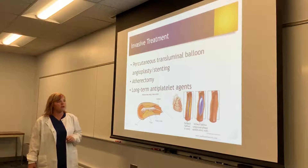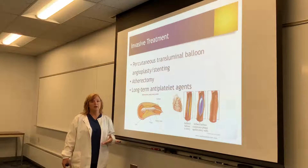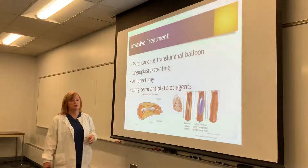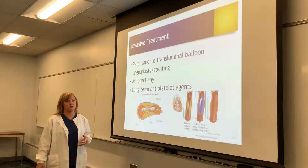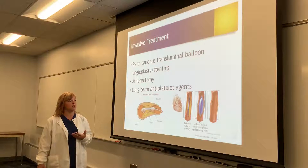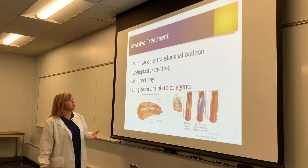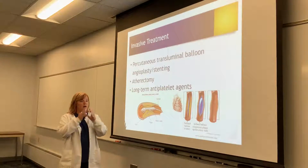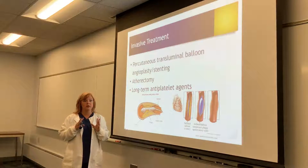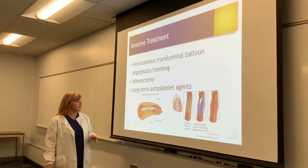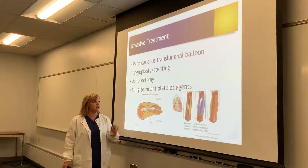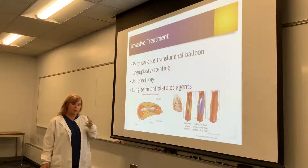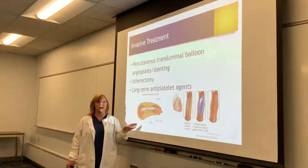For invasive treatments — if peripheral artery disease becomes severe, they may need to go in and remove some of the plaque or do angioplasty. It's very similar to cardiac catheterization, but now in the peripheral arteries. They can do angioplasty with ballooning, pushing the plaque to the side, or leave a stent in place to keep that artery open. They can also do atherectomies — kind of like a roto-rooter — going in with a rotary cutter to remove the plaque in the artery.